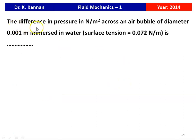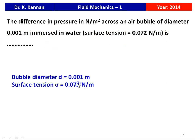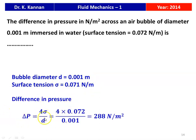Next question from the 2014 question paper: the difference in pressure across an air bubble of diameter 0.001 m immersed in water, with surface tension σ = 0.072 N/m. Using ΔP = 4σ/D = 4 × 0.072 / 0.001 = 288 N/m². The answer is 288 Newton per meter squared.